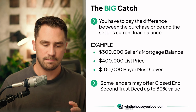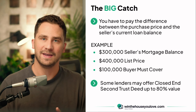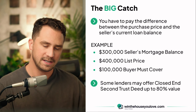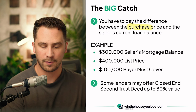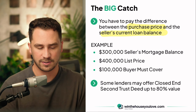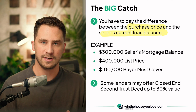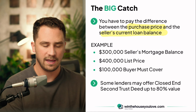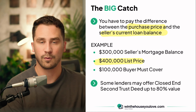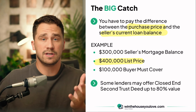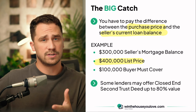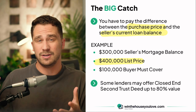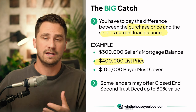Here's the big catch with this. When you are assuming a mortgage, you have to pay the difference between the purchase price and the seller's current loan balance. Let's say you're looking at buying a home listed for $400,000. You could get a traditional mortgage, do maybe 3% down on a conventional loan and purchase that home — but again, you have the current interest rate you would be paying.